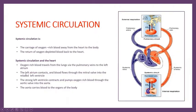In systemic circulation, oxygen-rich blood travels from the lungs via the pulmonary veins to the left atrium. The left atrium contracts and blood flows through the mitral valve into the relaxed left ventricle. The left ventricle then contracts and pumps oxygen-rich blood through the aortic valve into the aorta, which carries blood to the various parts of the body. Systemic circulation begins from the pulmonary veins entering the heart and ends when blood leaves through the aorta.